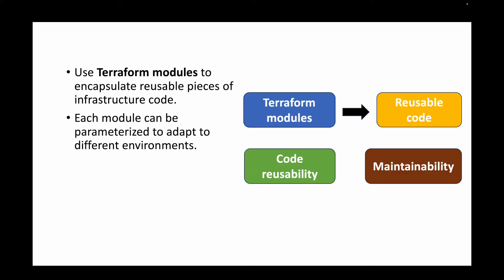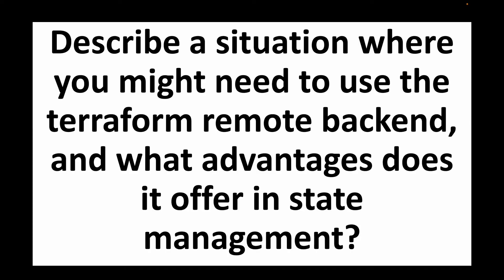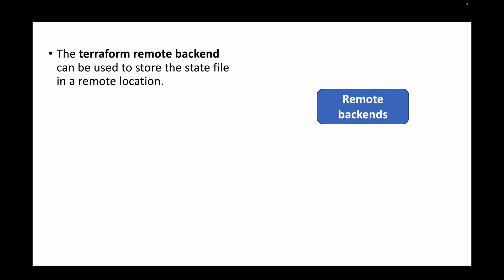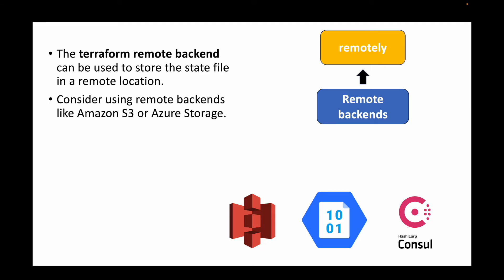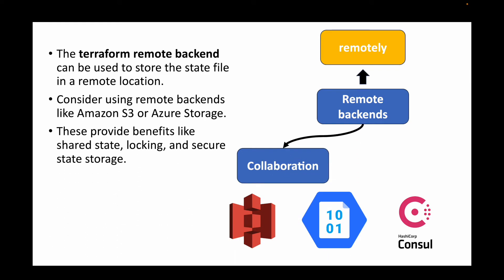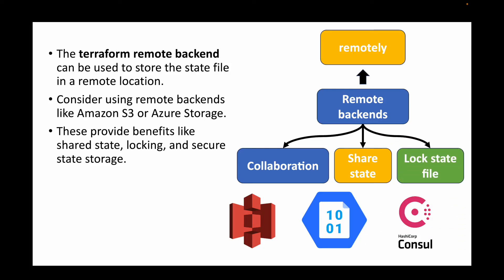The next question is: describe a situation where you might need to use the Terraform remote backend and what advantages it offers in state management. Terraform maintains a state file containing information about all managed resources. We can use remote backends to store state files in a remote location — common options include S3 buckets, Azure Storage, or HashiCorp Consul. This provides collaboration benefits: multiple people can share the state file, and state locking prevents concurrent operations from conflicting.